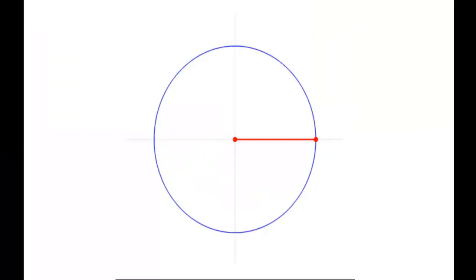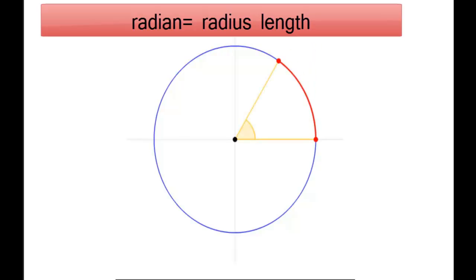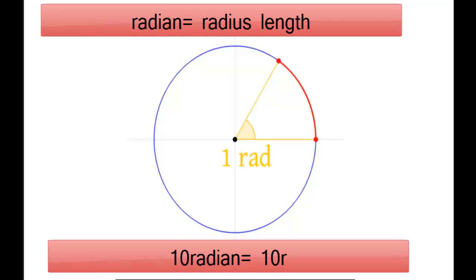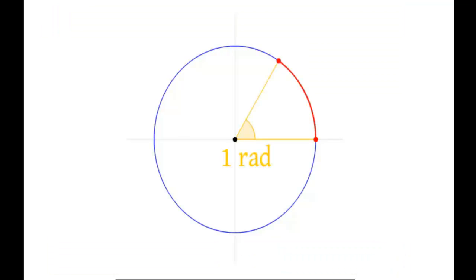If you walk away with one thing from this tutorial, any time you read the word radian, substitute it in your mind with the word radius length. So 10 radians equals 10 times r, which is radius length. I hope you enjoyed this tutorial, and I hope to see you in my next video.